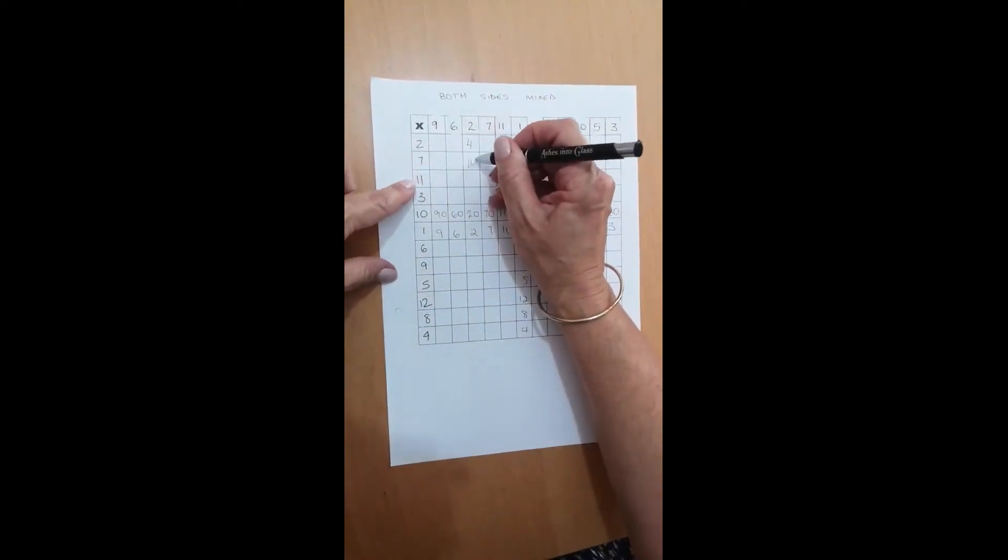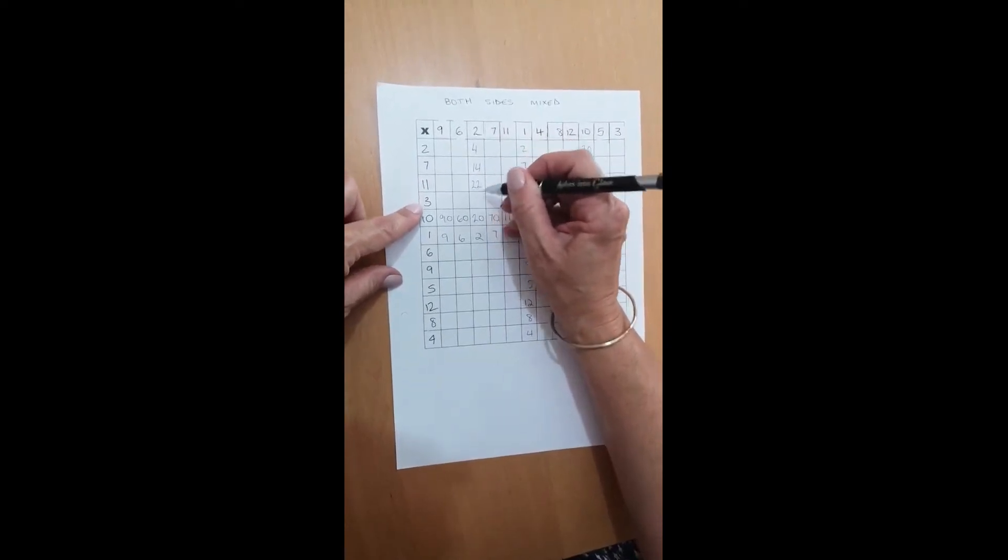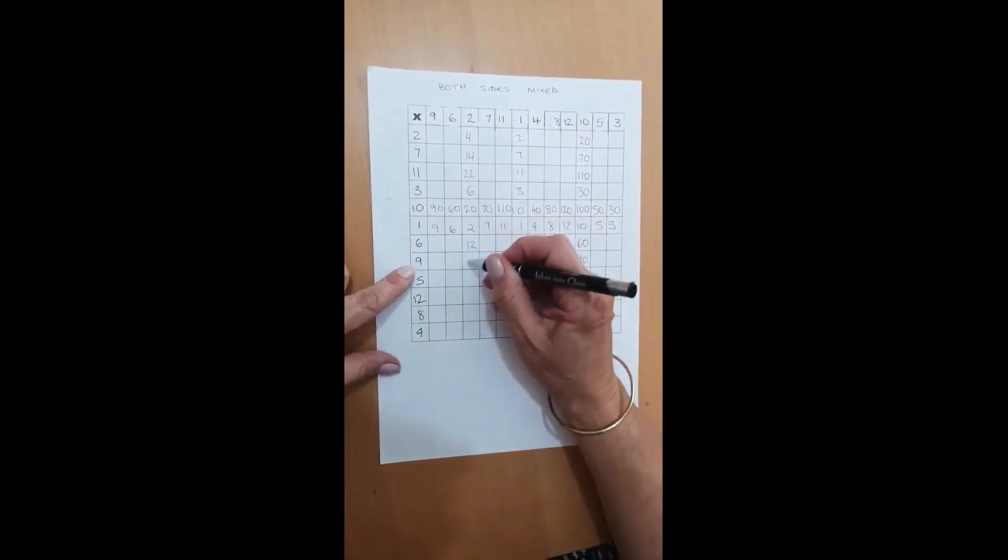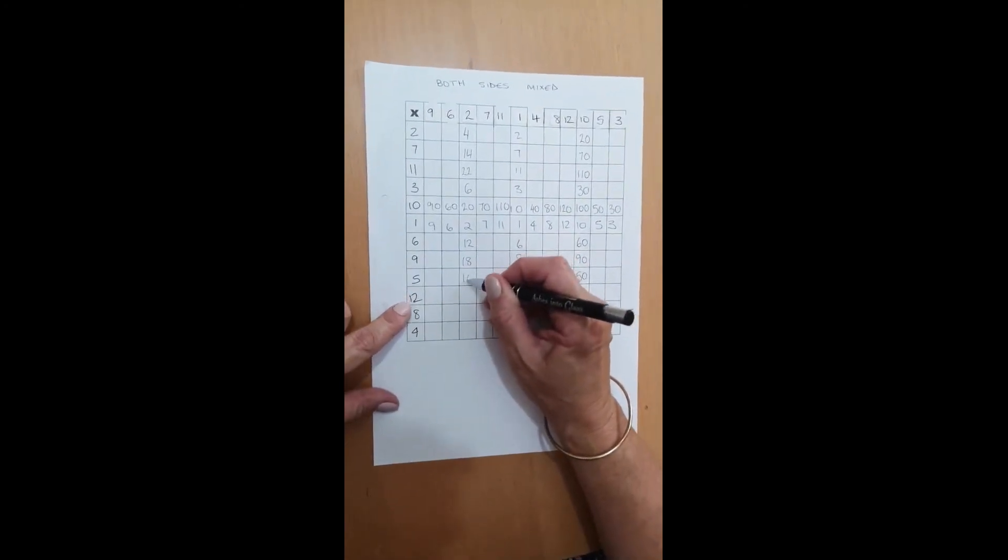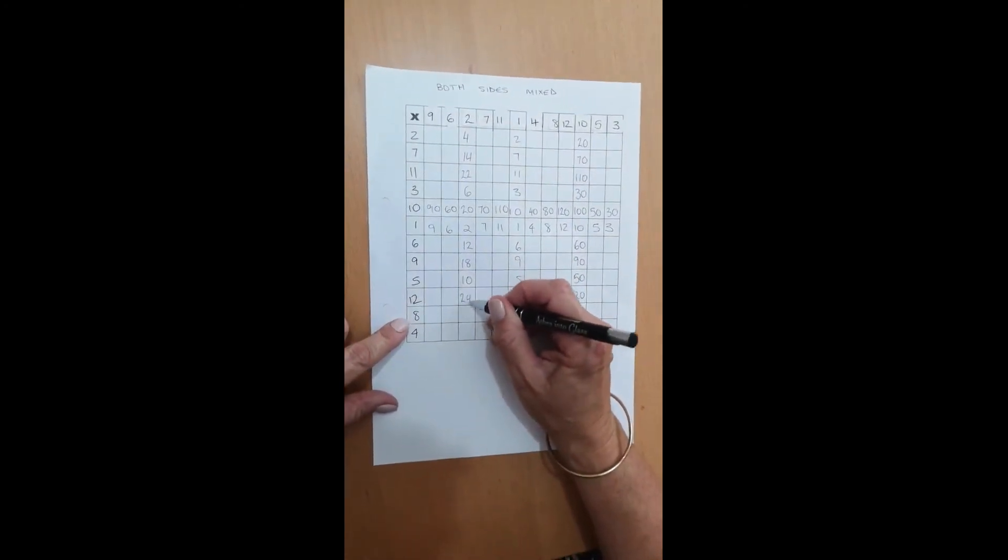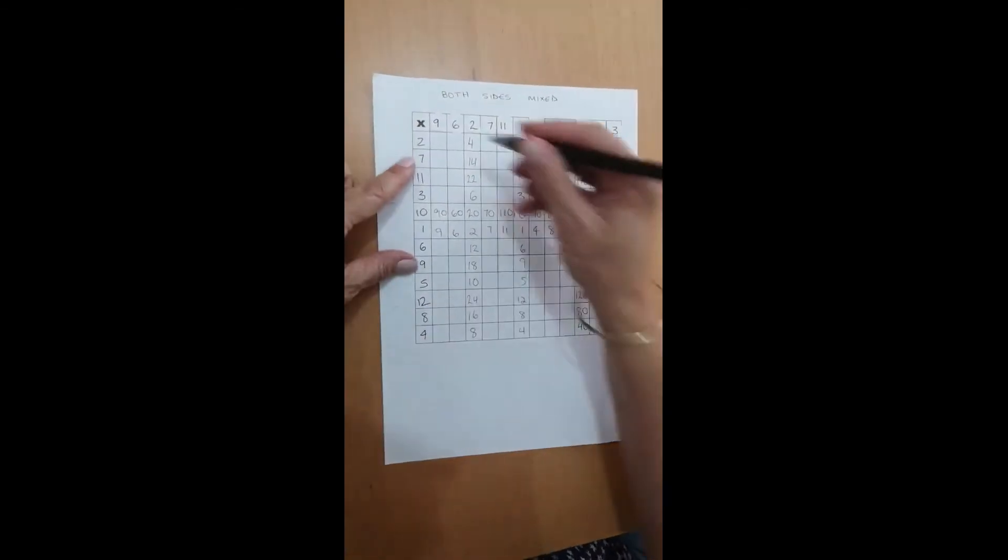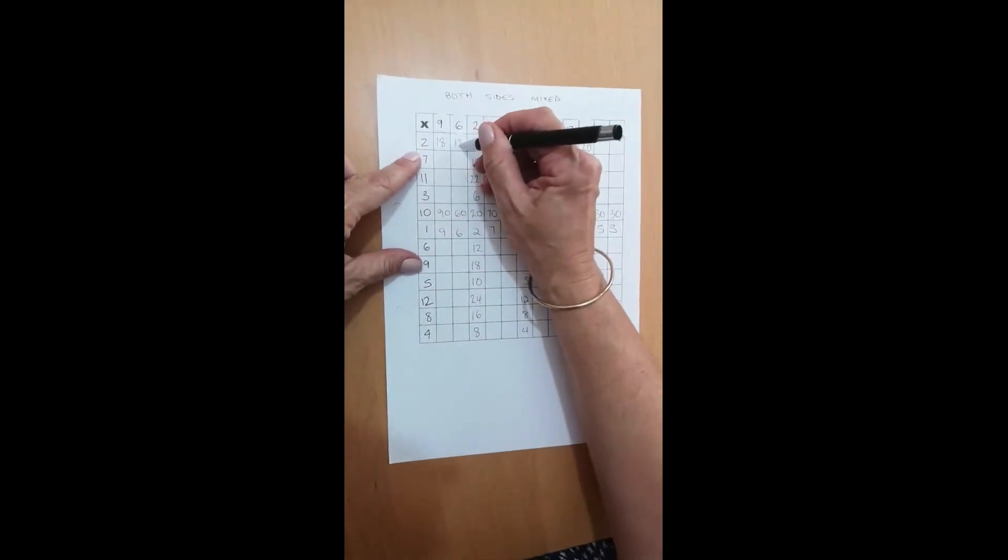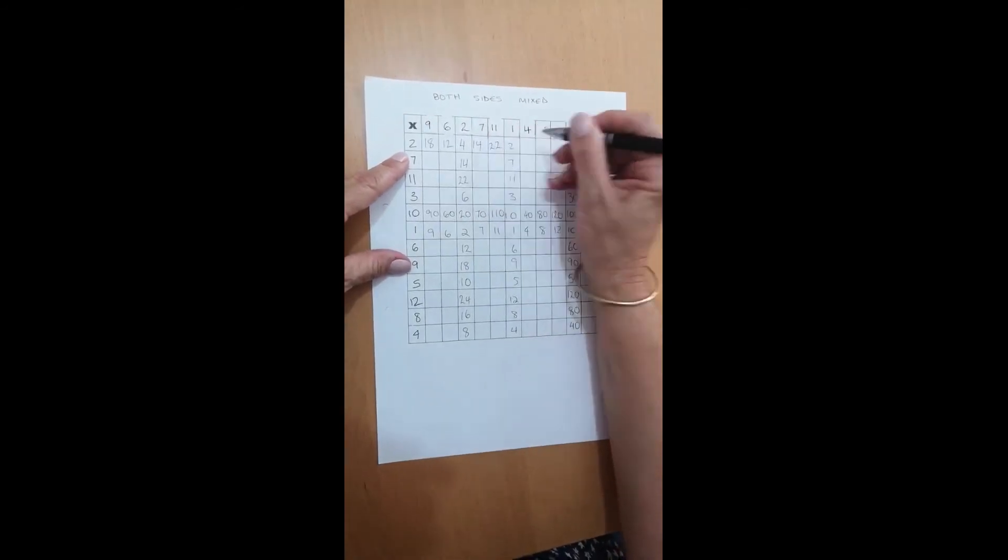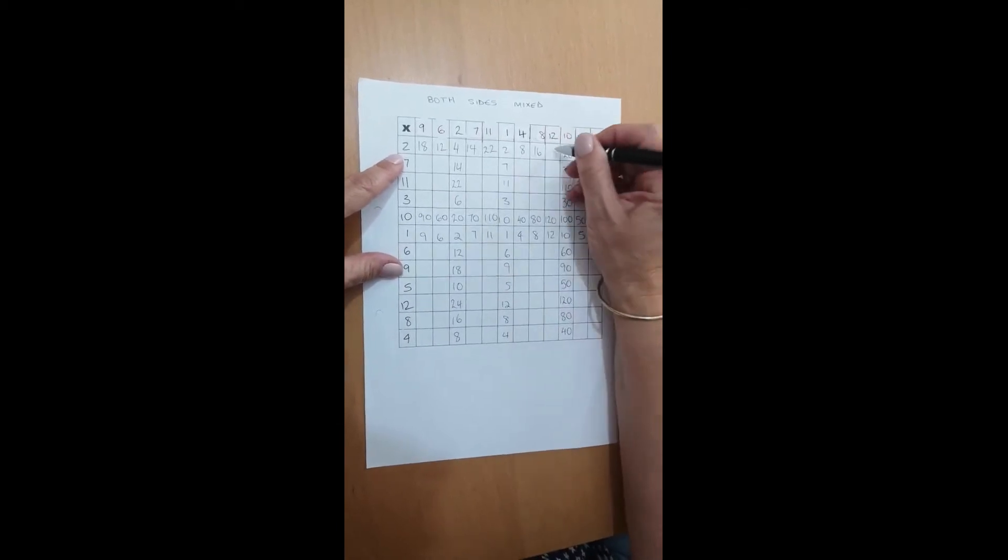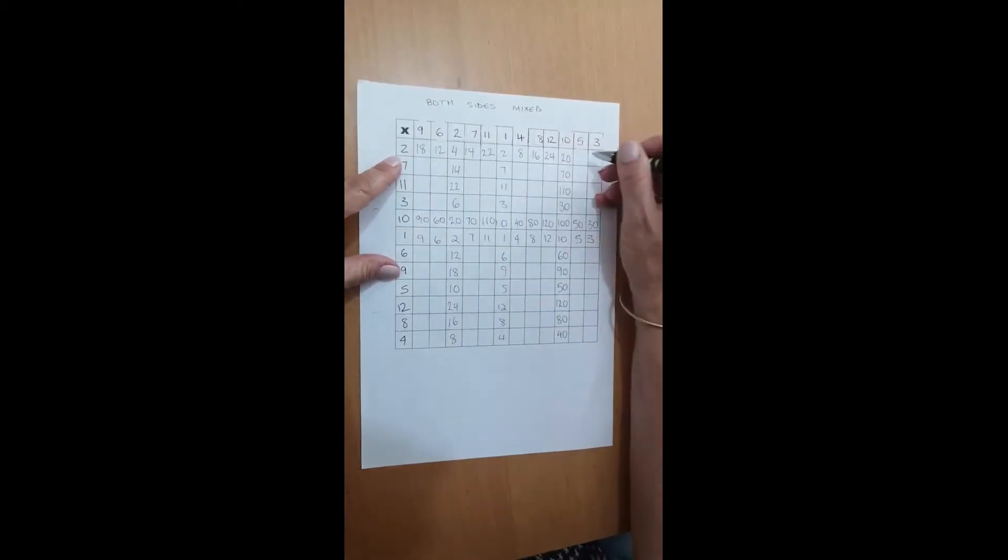4, this one's 14, 22, 6, 2, 6 is a 12, 18, 10, 24, 16 and 8. So just checking all the time that the number you're doing relates to the number at the top or at the side of the grid.